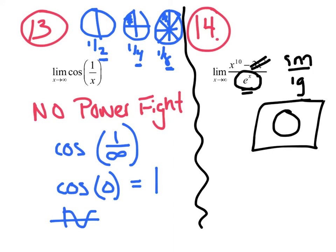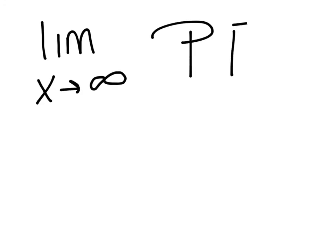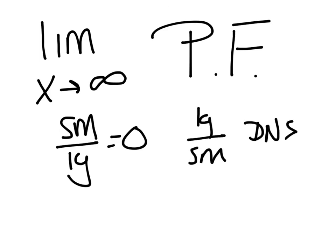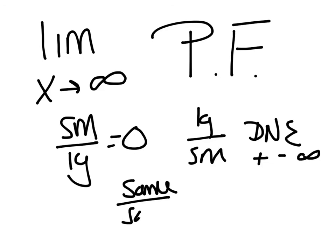I know that was a lot to take in. When we see the limit as x approaches infinity, be thinking power fight, and get those three rules down: small over large is zero; large over small is does not exist, which is either positive or negative infinity; and same over same is the ratio of the coefficients. Any questions, you know where to find us. Have a great night, and we'll see you tomorrow.